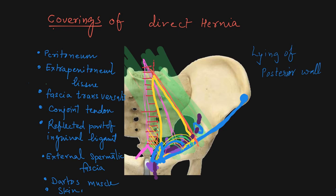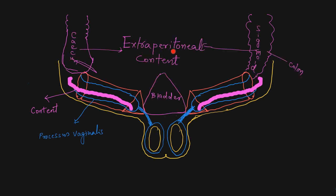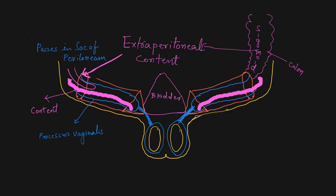One more hernia associated with the inguinal canal is the sliding hernia. Here, when the processus vaginalis passes through the inguinal canal, extra-peritoneal content — on the right side the caecum, on the left side the sigmoid colon, or on both sides the urinary bladder — passes through the sac of the peritoneum along with the other content. That is known as the sliding type of hernia.